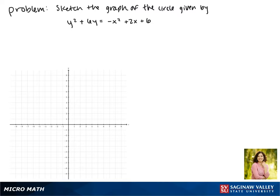Today we'll be sketching the graph of the circle given by y squared plus 6y equals negative x squared plus 2x plus 6. We want our equation to look like the standard form of a circle, and in order to do that we have to complete the square.